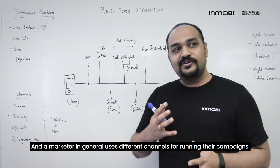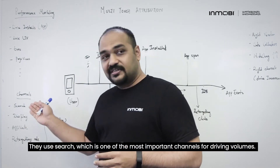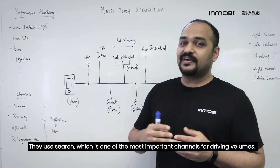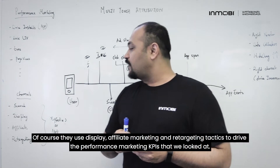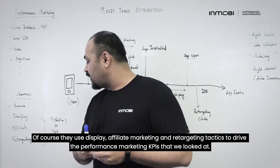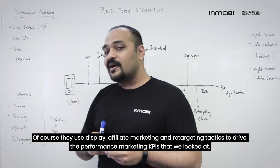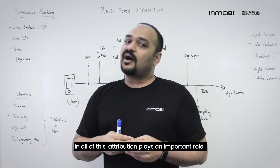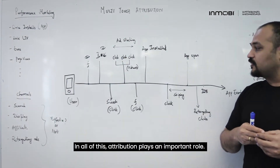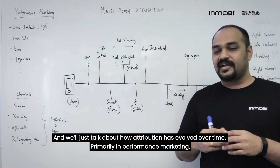A marketer in general uses different channels for running their campaigns. They use search, which is one of the most important channels for driving volumes. Of course, they use display, affiliate marketing, and retargeting tactics to drive the performance marketing KPIs we looked at. In all of this, attribution plays an important role, and we'll talk about how attribution has evolved over time.